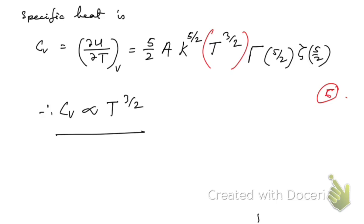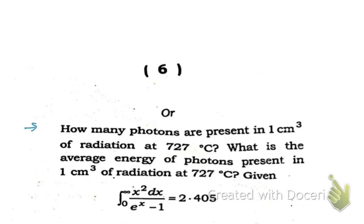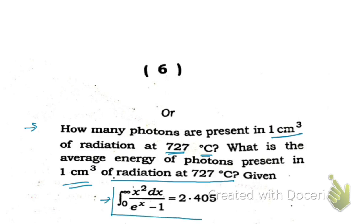Now for question 4C alternate: how many photons are present in one centimeter cube of radiation at 227 degrees Celsius? What is the average energy of photons present in one centimeter cube of radiation at 227 degrees Celsius? A key result is given in the question which is very important for this problem.